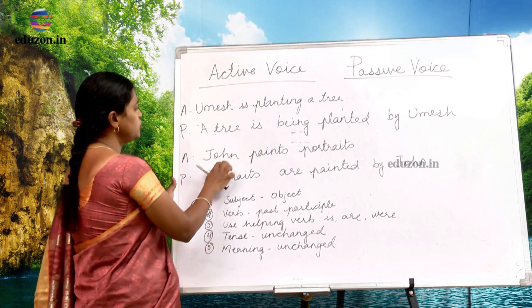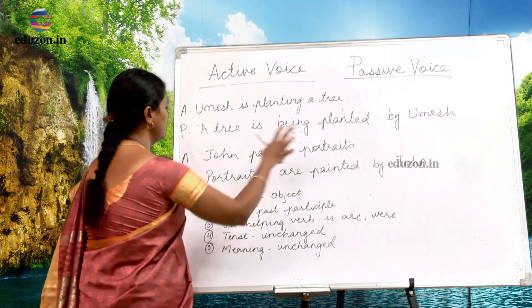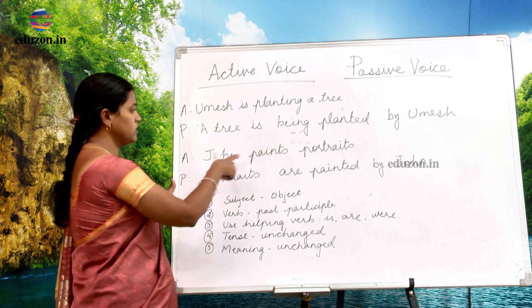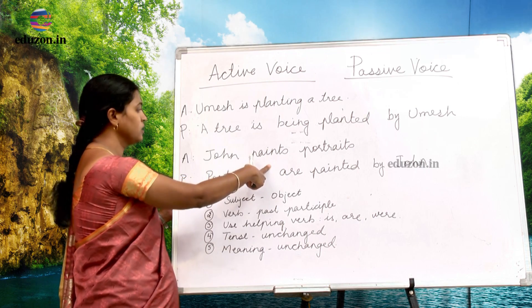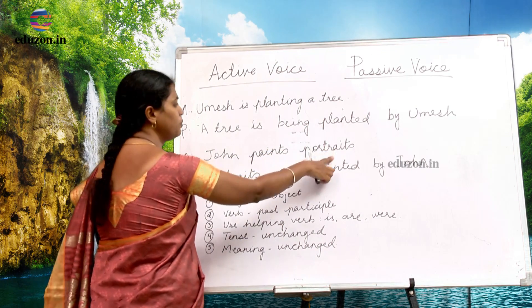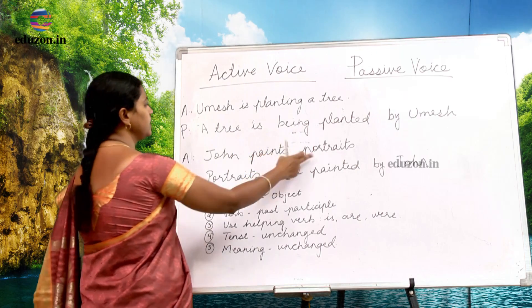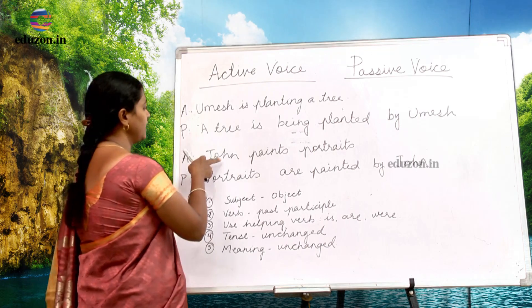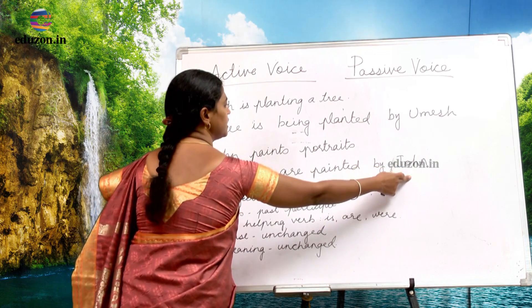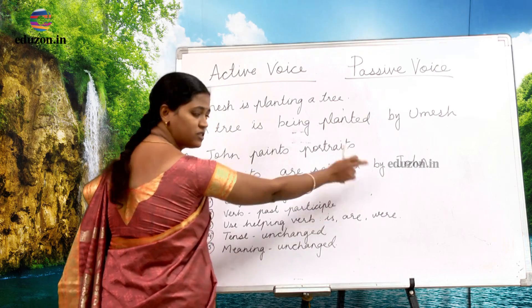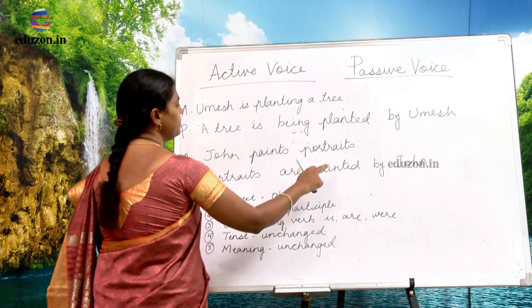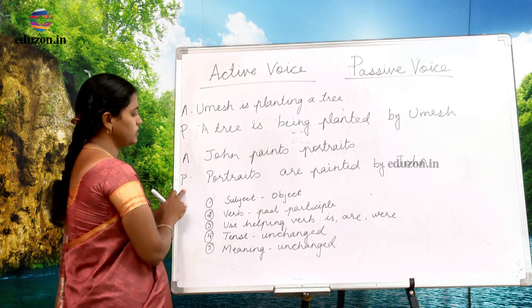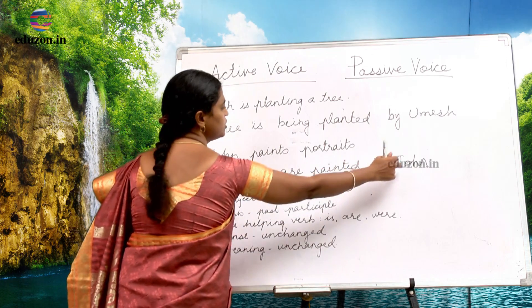Similarly, in the second example: John paints portraits. John is the subject, paints is the verb, and portraits is the object. Here again, portraits become the subject in passive voice and John becomes the object, prefixed by 'by'. The verb painting is used in past participle form, so it becomes: portraits are painted by John.